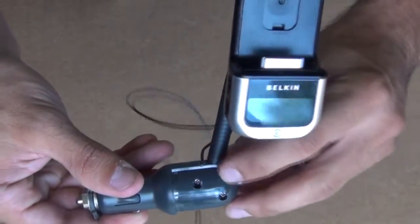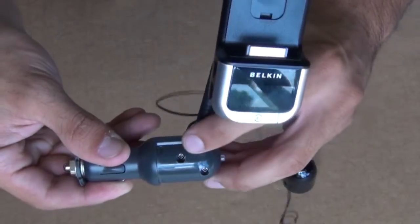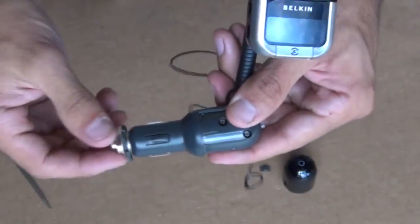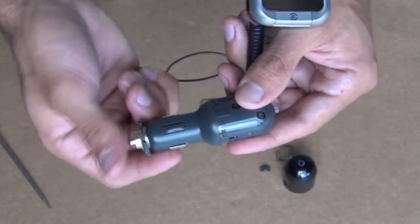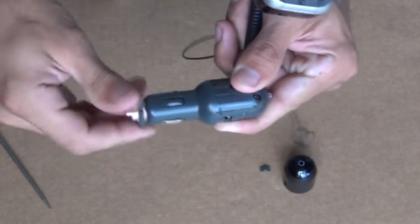Okay, now what we've done is we've exposed these two small Phillips screws. So before we take those out, we'll take the small fuse mechanism out, so you can do that just by unscrewing it.